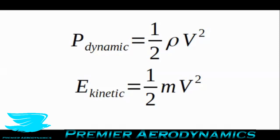But why is dynamic pressure so important? When we use wind tunnels, we often use the dynamic pressure to determine the velocity of the flow. If you've ever heard of a pitot-static tube, this is simply a tube with a hole in the front and holes around the side. These holes measure the total pressure and the static pressure, and from that we can determine what the dynamic pressure is, which we'll get to later. If we know the dynamic pressure, we can rearrange the equation — put the half and rho on the other side, square root it — and get the velocity.